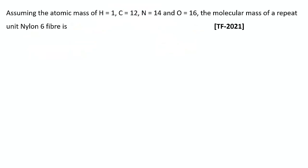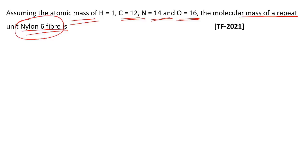The next question is a one-mark NAT (numerical answer type) question. Assuming atomic mass of hydrogen as 1, carbon 12, nitrogen 14, oxygen 16 — find the molecular mass of a repeat unit of nylon 6 fiber. One-mark numerical questions in textiles are comparatively simple and straightforward formula-based questions. If you know the formula for the nylon 6 repeat unit, you can calculate the molecular mass. Nylon 6 is produced from caprolactam, whereas nylon 6,6 is produced from adipic acid and hexamethylene diamine.